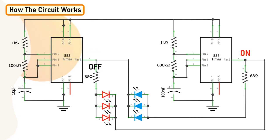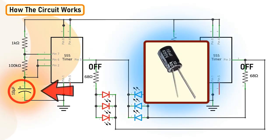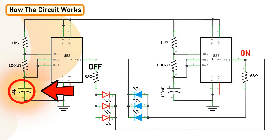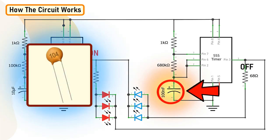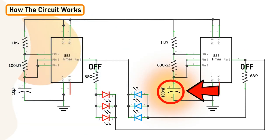You can change the frequency of toggling between the successive LED clusters by changing the higher value capacitor. Increasing its value will increase the time between the successive toggling between the two LED clusters and vice versa. Similarly, changing the value of the lower value capacitor will change the blinking rate of the LED clusters.